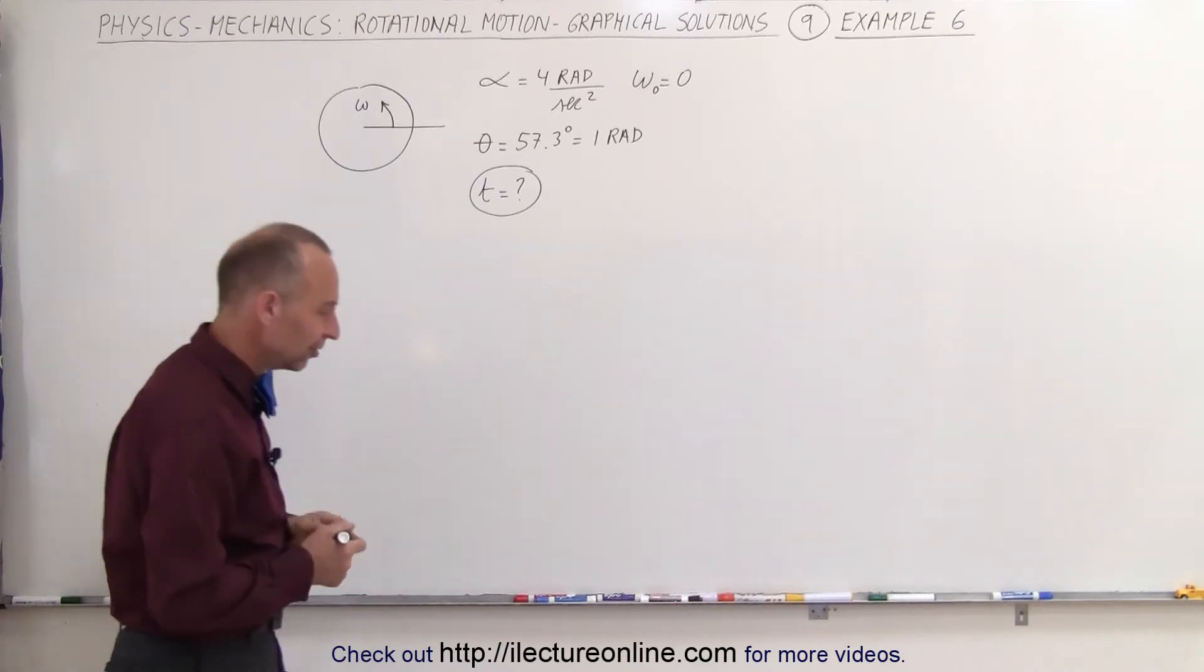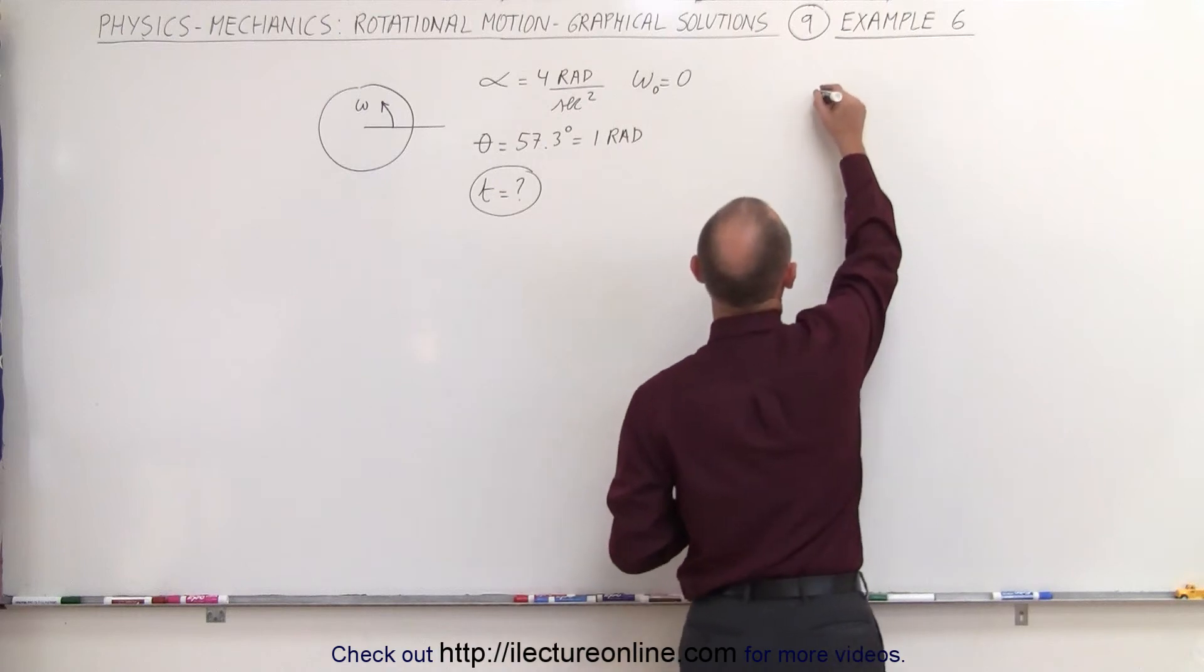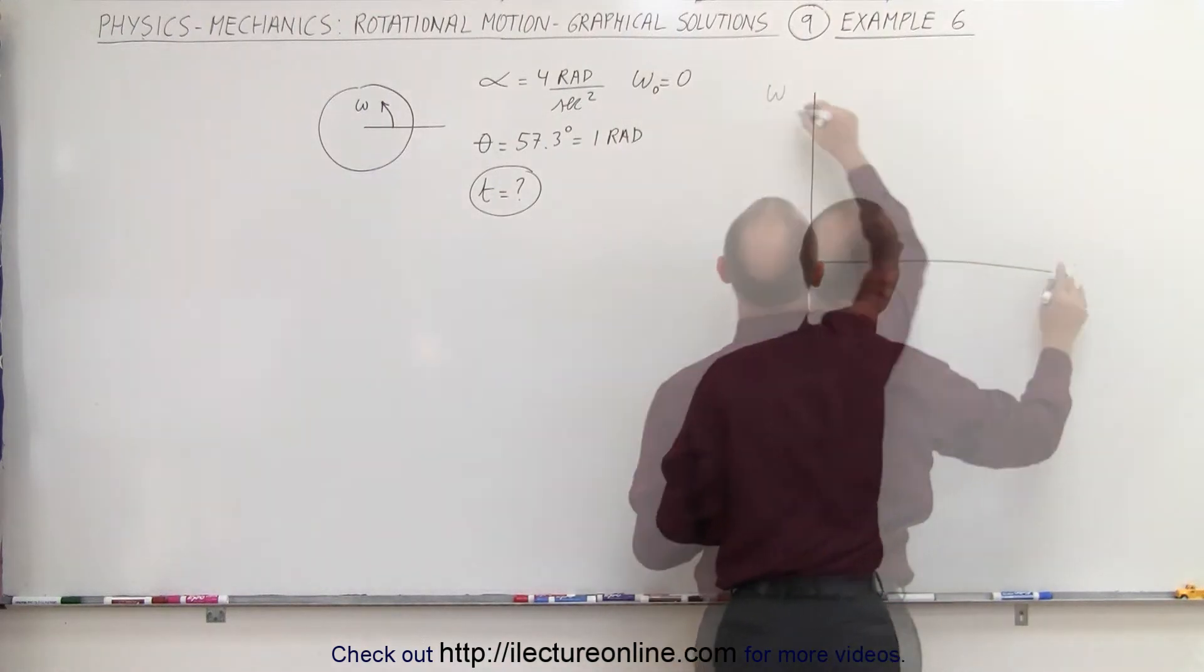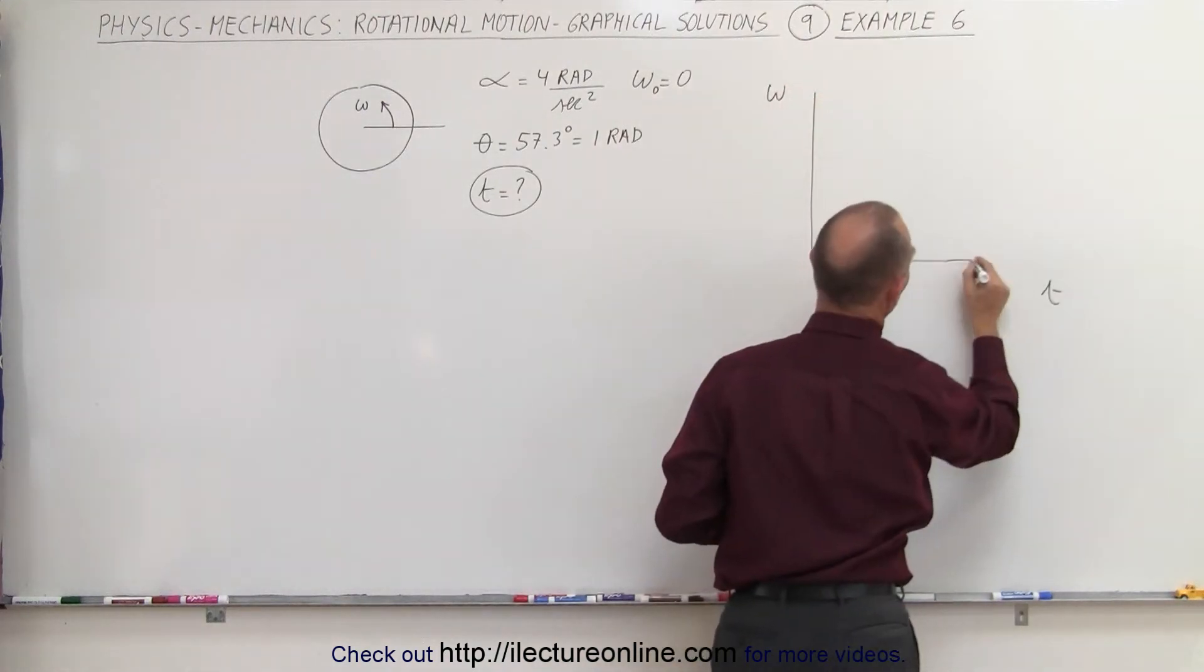Alright, how do we do this? Again, we draw a omega versus time graph. Time, omega, let's try and make this a straight line, there we go.